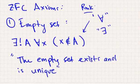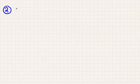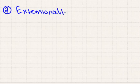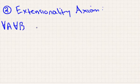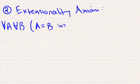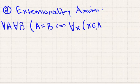The second axiom is the extensionality axiom. The extensionality axiom gives a condition, or a test in some sense, under which two sets are equal to each other. The long way to write it out is like this: formally, for all sets A and B, A is equal to B if and only if for all other sets X, X is in A if and only if X is in B.